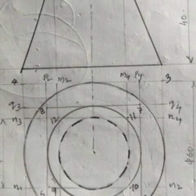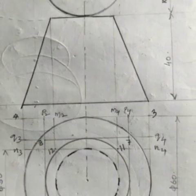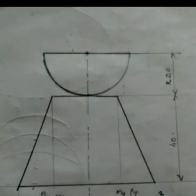Let's go to the front view. The height of the frustum is 40mm. The height of the base is 40mm. The height to the top circle is 40mm.